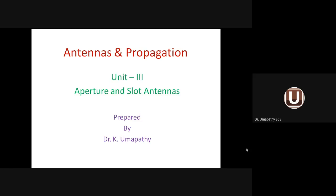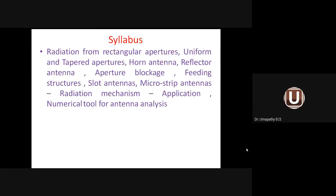Unit number three covers aperture and slot antennas. So far in unit one we covered fundamentals of radiation, basic antenna parameters, and radiation from a dipole oscillating current element and a folded dipole. Under unit two we went from a single antenna element to antenna arrays — types of arrays, broadside array, end-fire array, binomial array, phased array, antenna synthesis, principle of pattern multiplication, and finally the Yagi-Uda antenna array.